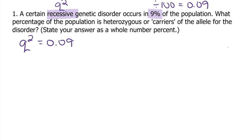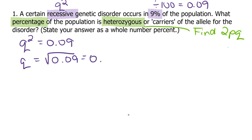Let's look at what we are finding. What percentage of the population is heterozygous? So we are looking to find 2pq. After our q-squared, we can find q. It is the square root of q-squared. So that's 0.3.